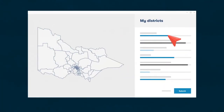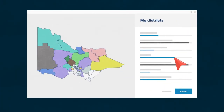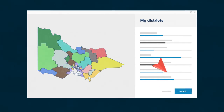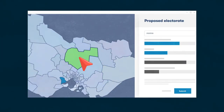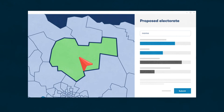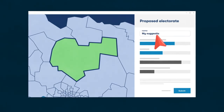The tool allows you to move areas to create your own electorates. You can make a submission about the whole state or just about the area that interests you. You can also suggest new names for the electorates.